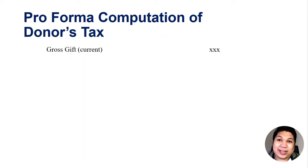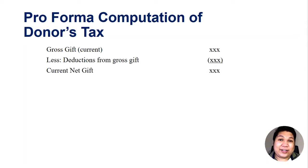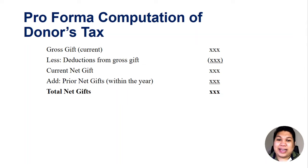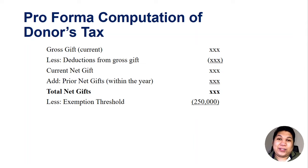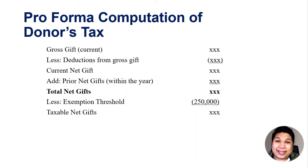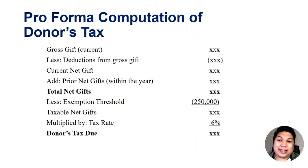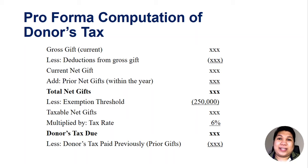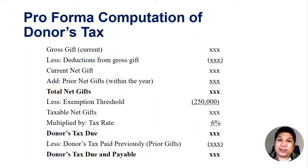We have the current gross gift; we deduct the allowable deductions from the gross gift to get the current net gift. Then we add all prior net gifts made within the same year to get the total net gifts. We then deduct the exemption threshold of P250,000, which is the annual exemption for the entire year, to get the taxable net gift. We multiply by 6% to get the donor's tax due, and deduct any donor's taxes paid previously to get the donor's tax due and payable.